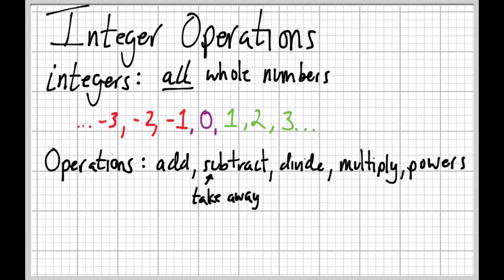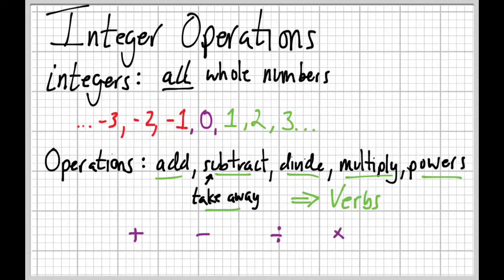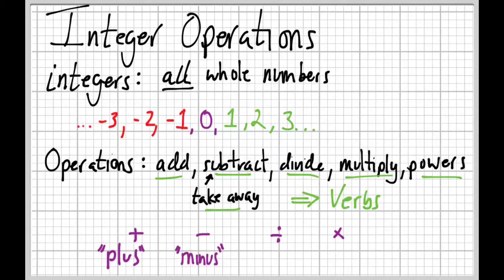One thing I'd like to point out that gets overlooked: these words — add, subtract, divide, multiply — are verbs, action words. When we're talking about what we're doing, we use these words. These often get mixed up with symbols. The plus sign is the symbol for adding, the minus sign for subtracting, and so on. When we read these symbols there are specific words we say: plus, minus, divided by, and times.